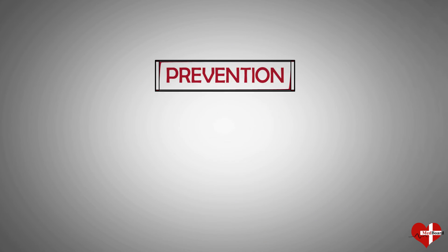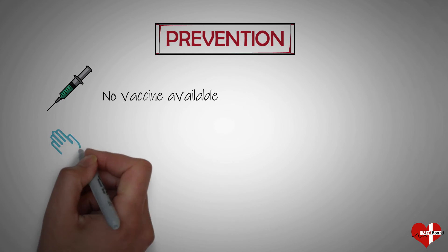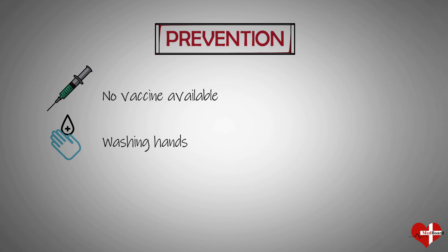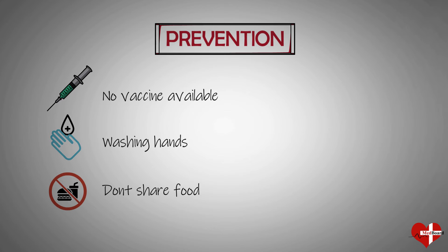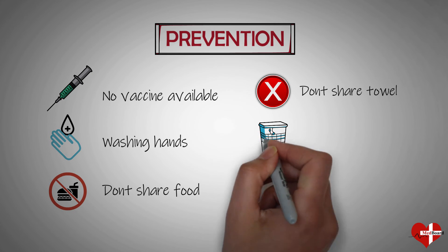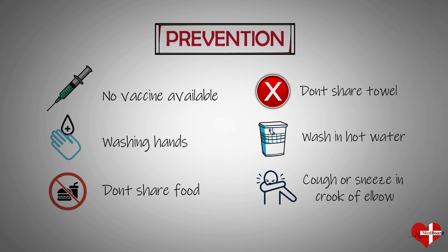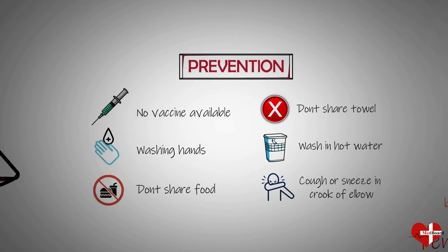There is no vaccine available that prevents strep throat. One of the most effective ways to avoid infection is by regularly washing your hands. If you can't access soap and water, use a hand sanitizer instead. Don't share drinks or food with someone who has strep throat. If someone in your home has strep throat, don't share their towels, sheets, or pillowcases. Wash dishes and laundry in hot, soapy water. If you have strep throat, sneeze or cough into the crook of your elbow or a tissue rather than into your hand, and be sure to wash your hands frequently.